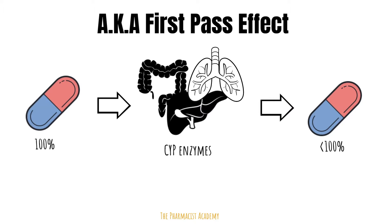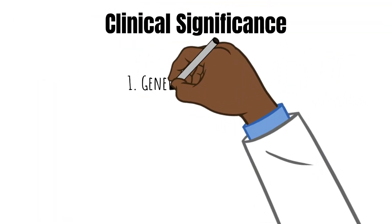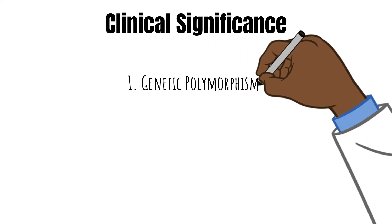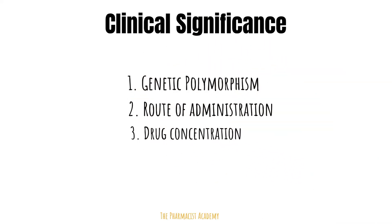Understanding the definition, it plays a huge role in clinical practice, because we are getting a reduced amount of the drug at the site of action, so we have to take that into consideration. We'll be focusing on genetic polymorphism, route of administration, and drug concentration.